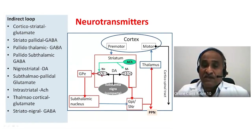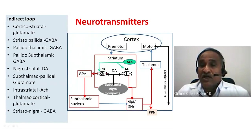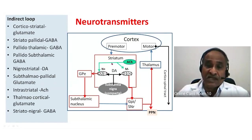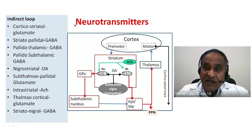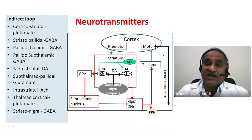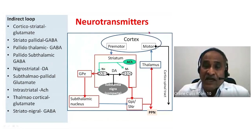Similarly, dopamine D2 receptors decrease the output of the indirect circuit, and that is balanced by nicotinic acetylcholinergic actions. This is in brief about the overall circuitry of the basal ganglia.